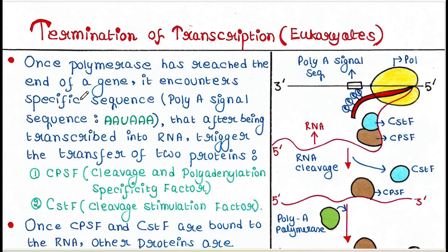Once the polymerase has reached the end of a gene, it encounters a specific sequence called the poly-A signal sequence. The sequence is AAUAAA. RNA polymerase transcribes this sequence, and after transcribing it, two proteins are recruited: CPSF and CSTF.